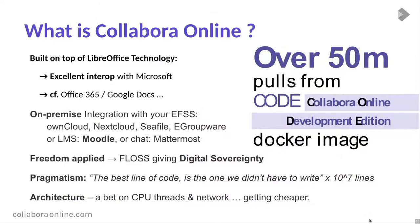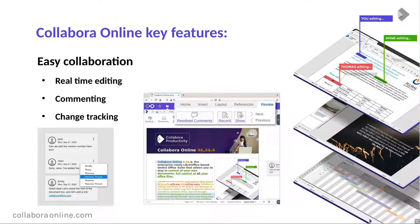Our architecture is a bet on CPU threads and network getting cheaper. We render a lot on the server, calculate on the server, and push it to you over the network. It's much more efficient than a VDI solution, and much more is shared on the server. About 50 million Docker images have gone out there, with large numbers of people running this themselves.